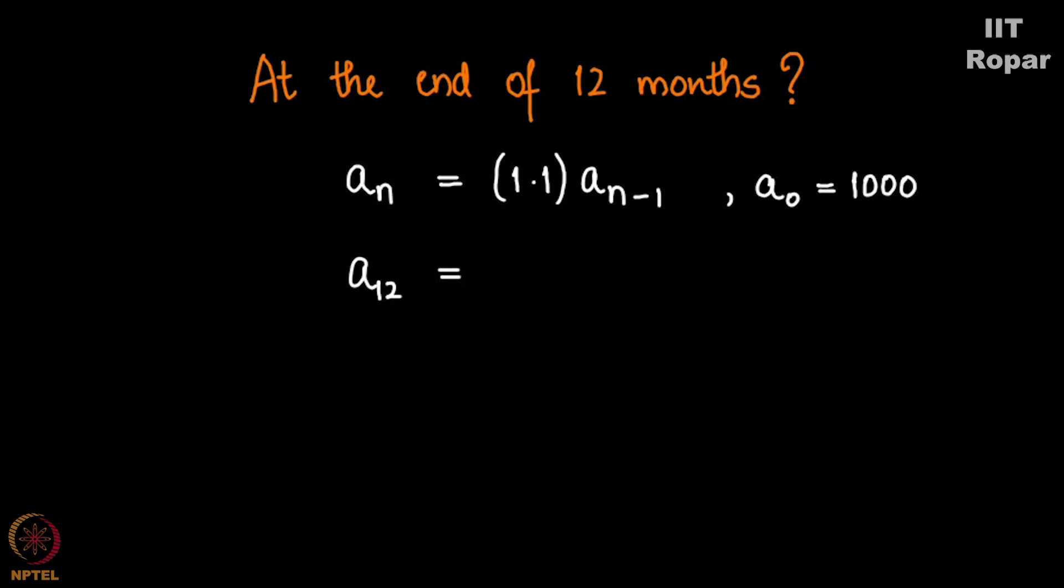A0 is 1000, what is A12? If AN is 1.1 times A to the N-1, we know that A12 is simply 1.1 to the power of 12 times 1000, we saw that just now, which is actually equal to 3138 rupees 42 paise say, let's say rounded off to 3138.